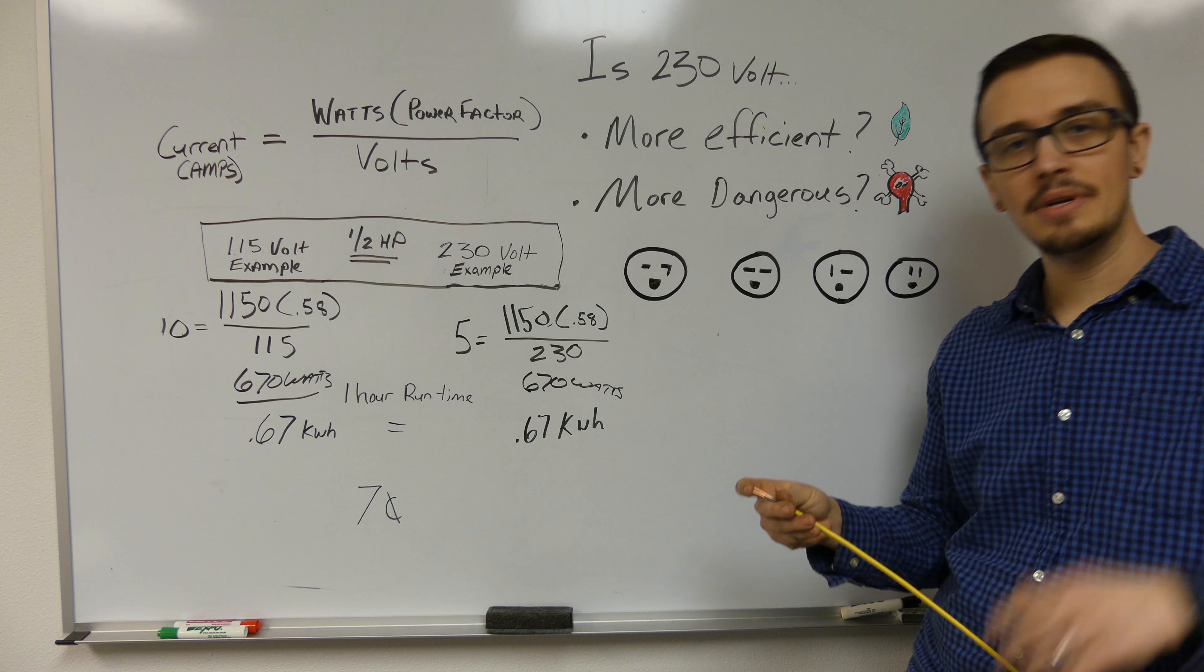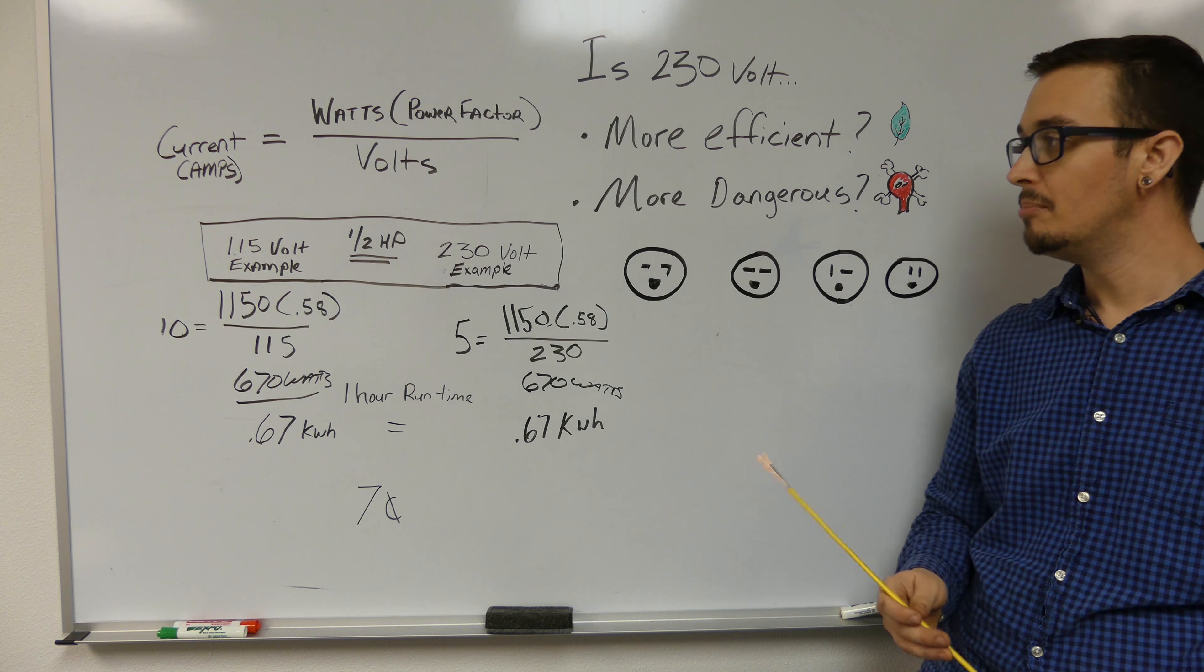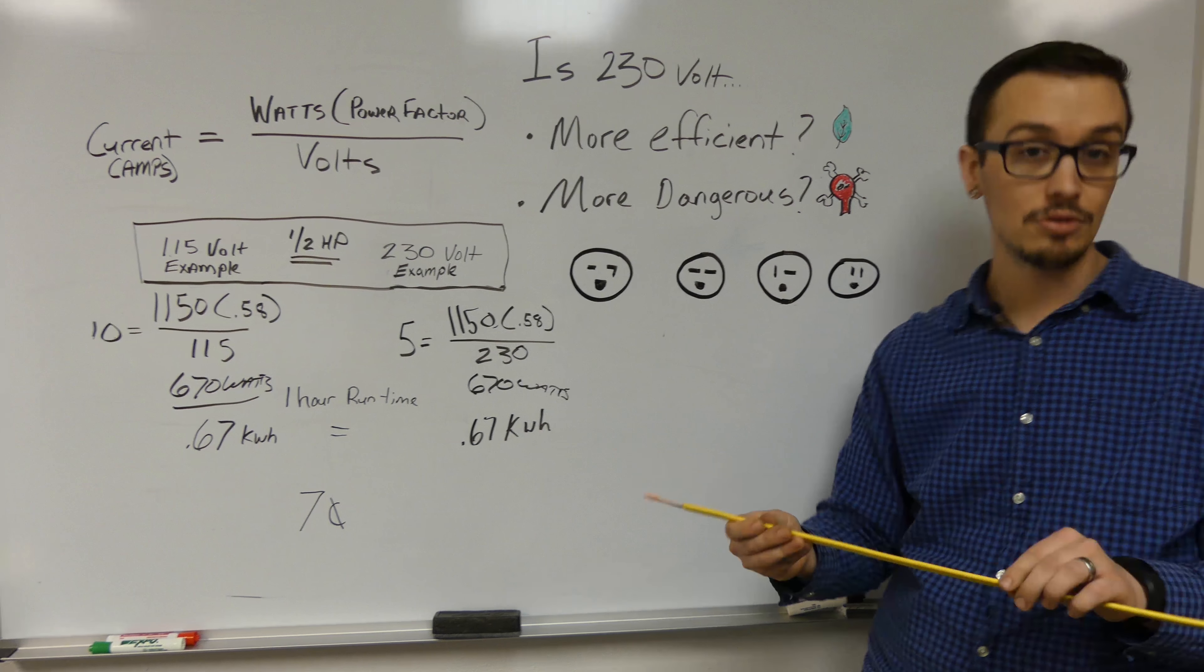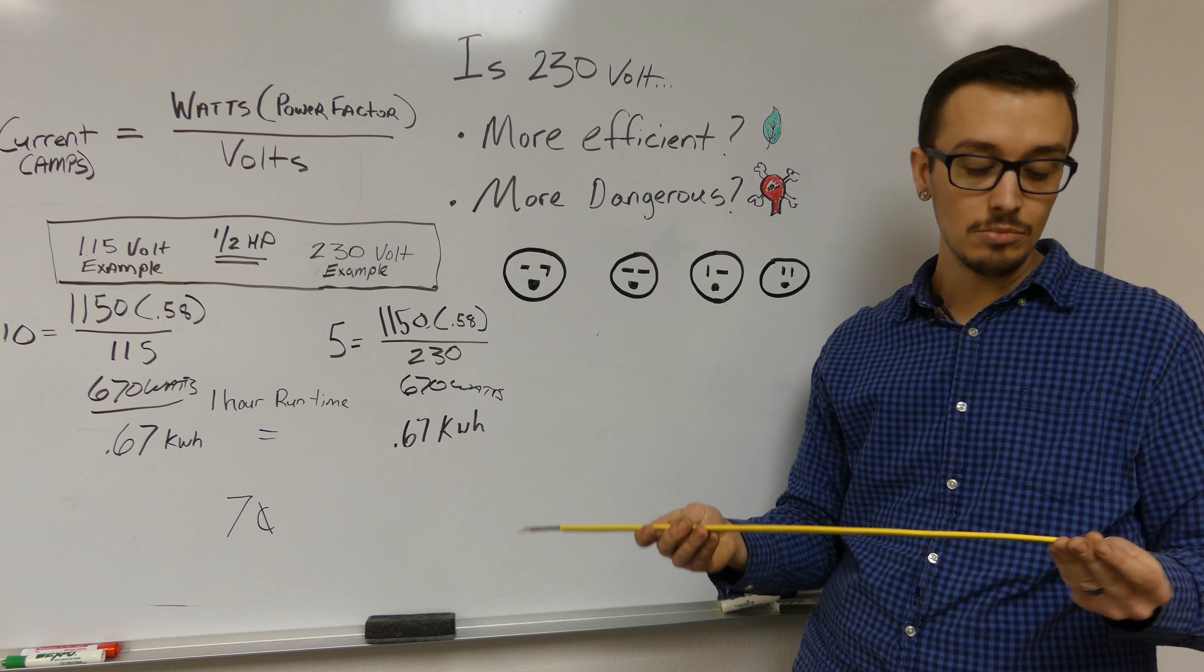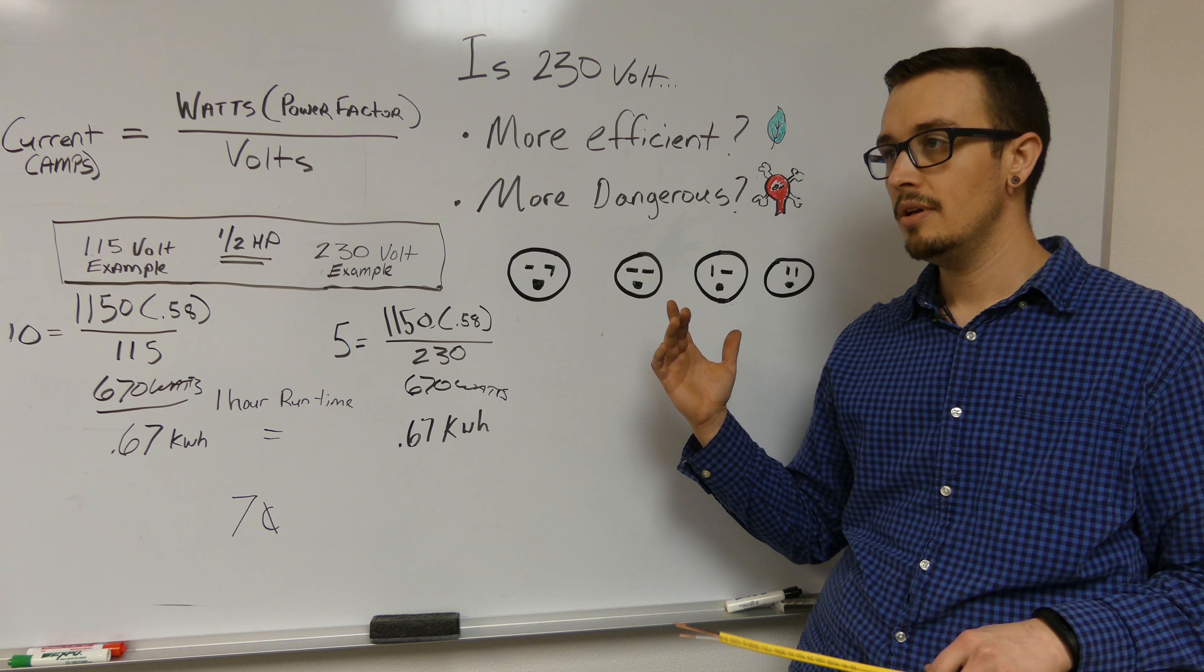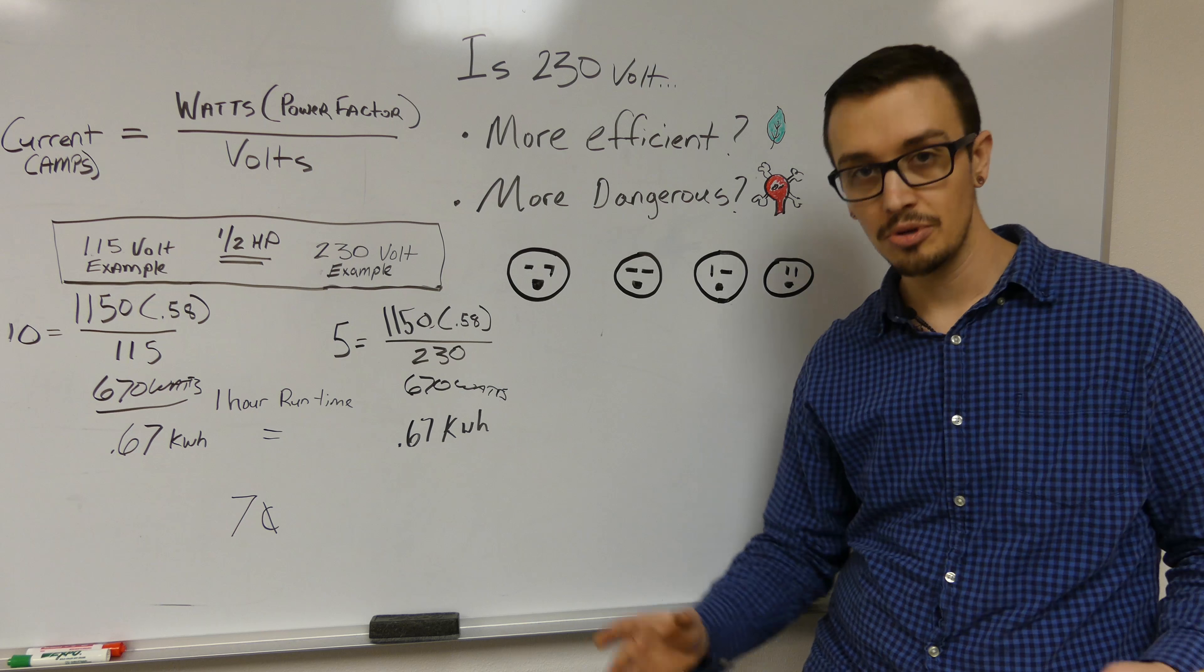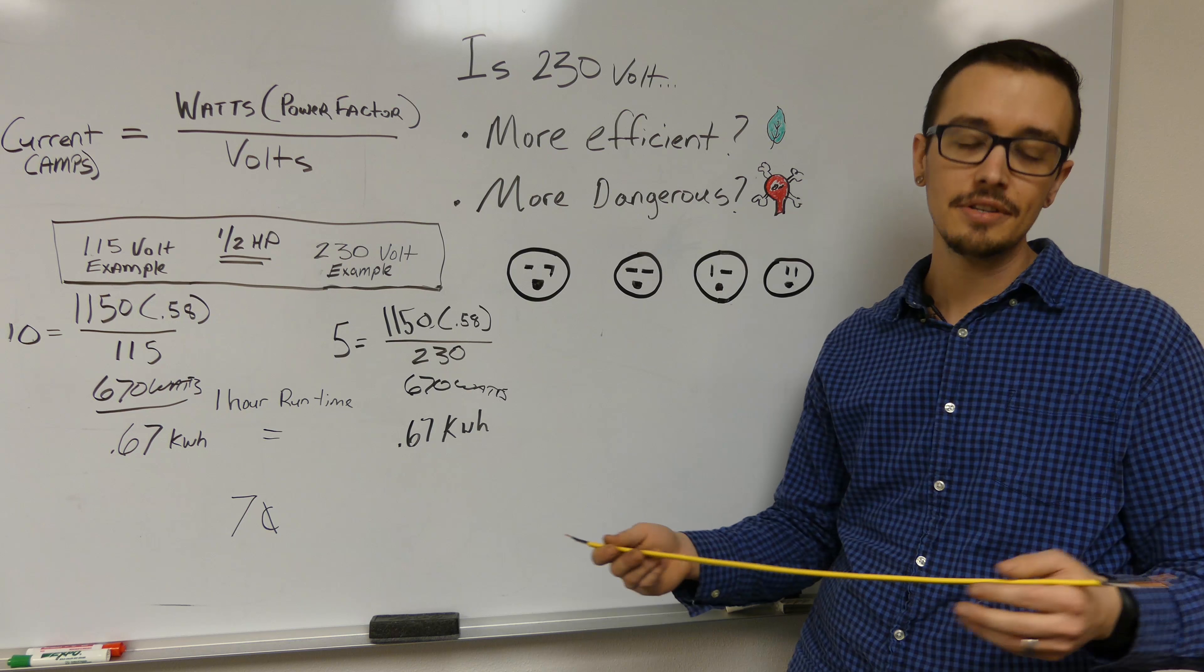Now onto the more: is 230 volt more dangerous? If you're following along in our first scenario, we determined that 230 volt is not more efficient, but it is capable of cutting down the amount of current required on each leg. Thus the wire is able to be more effective over longer distances because you don't have as much current trying to go through it. How does that relate to the danger element of electricity? A lot of people say, 'oh no, it's the volts that kill you,' or 'it's the amperage that kills you.' Really what can cause your heart to stop or kill you is the current.